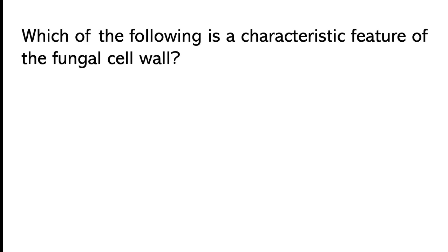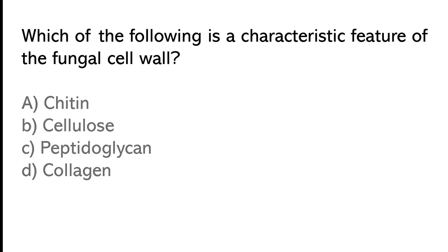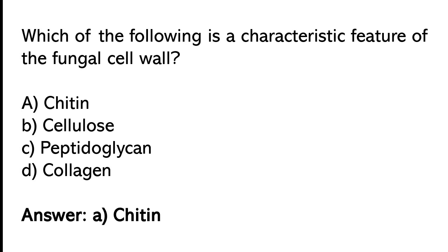Which of the following is a characteristic feature of the fungal seal wall? Chitin, cellulose, peptoglycan, or collagen. The correct answer is option A: Chitin.